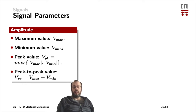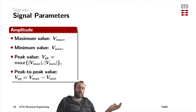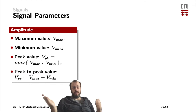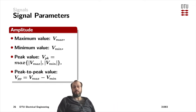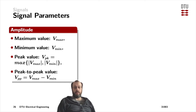Now that we've learned about the attributes of signals, like time-independent and time-dependent signals, DC versus AC, it's a good way for an engineer to actually quantify their statements. Therefore, we're going to use some parameters to describe signals. One of them is the amplitude, and there are different values to actually describe what's on the y-axis if we're looking at a signal.